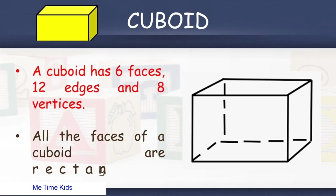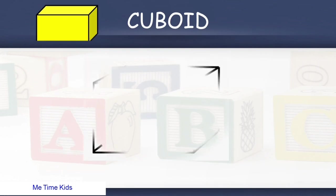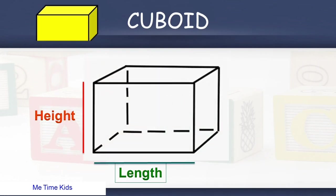All the faces of a cuboid are rectangular and flat. Look at the figure for face, edge, and vertex. Look at the figure for height, length, and width.